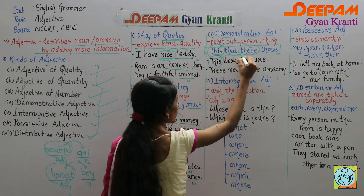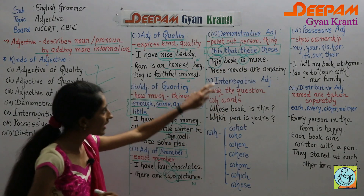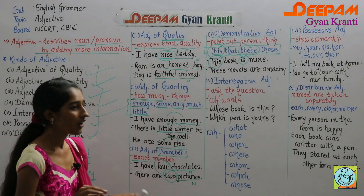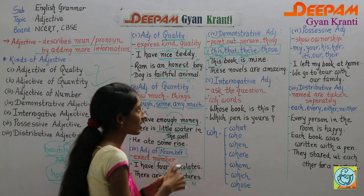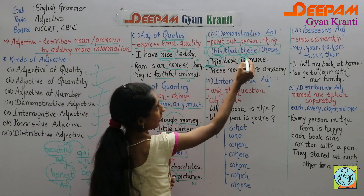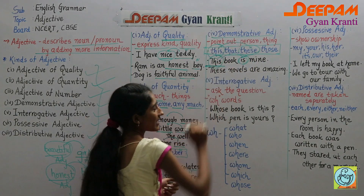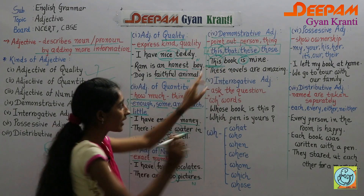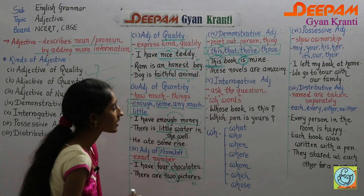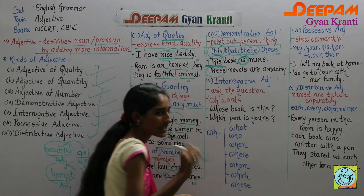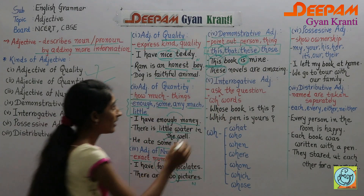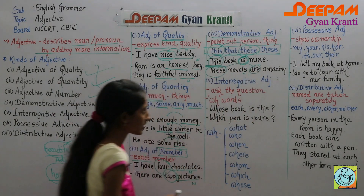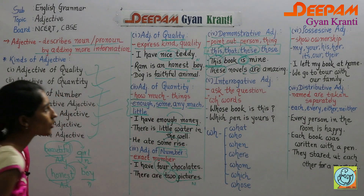For example, 'This book is mine' — 'this' indicates singular. In exams where you must find an error, if 'is' is given then 'this' should be used, not 'these.' 'These novels are amazing' — I am talking about specified novels, and 'these' indicates plural because I used 'are' and 'novels.' So be careful when using this, these, that, and those.